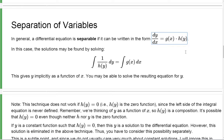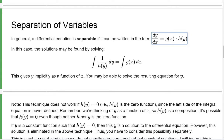That's not always the case — you can't always separate any function of both x and y. Sometimes it's separable, sometimes it's not. If it is separable, then you can always find the solutions by solving the corresponding integral equation instead. You can think of this as moving things back and forth in the equation and then integrating.